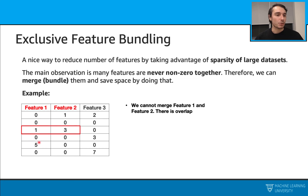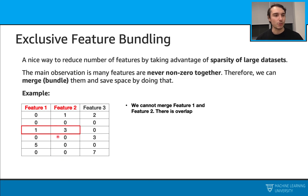With this row, it works — they are both zero. With the next, five and zero — it works, we can merge them. And the last one is zero, zero — again, it works. But because of that overlapping row, we cannot merge features one and two. There is that overlap there.